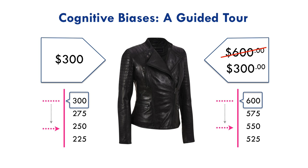So this is the anchoring effect. You're given a question — a difficult cognitive task — in this case, to estimate what the jacket is really worth. And you're given a piece of information, a number. Your brain uses this number to simplify the task: anchor to the number you're given, and then make adjustments using whatever background knowledge you have that's relevant to the situation. Sometimes you'll adjust upwards, sometimes downwards, depending on the context and the question asked.